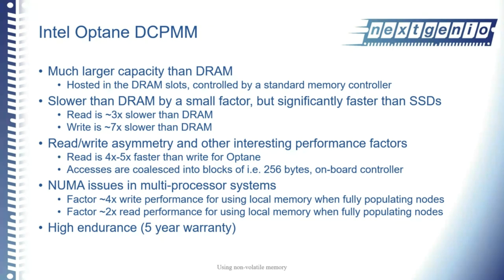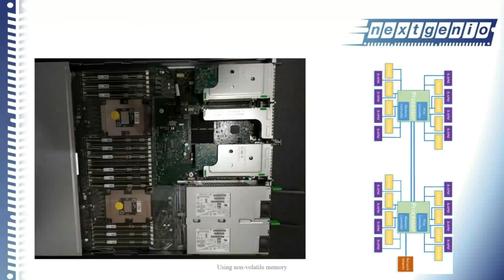Because we're putting the memory in memory channels, we can also run into non-uniform memory access (NUMA) cost issues, just as with volatile DRAM, when populating a multi-processor system. Our prototype has two processors per node — each processor has 96 GB of volatile memory and 1.5 TB of non-volatile memory, giving the whole node 192 GB of volatile memory and 3 TB of non-volatile memory. Memory physically attached to one processor is slower to access from the other processor.